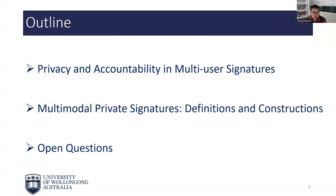Here is the plan of my talk. First, I will discuss several prominent examples of previous multi-user signature systems with privacy and accountability features, and our observation regarding their shortcomings. Then I will demonstrate how our new primitive can address these shortcomings. Next, I will sketch our definitions and constructions for multi-modal private signatures. Finally, I will list several interesting questions that we left open.